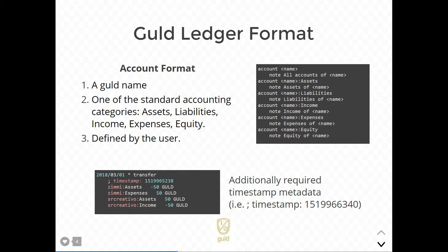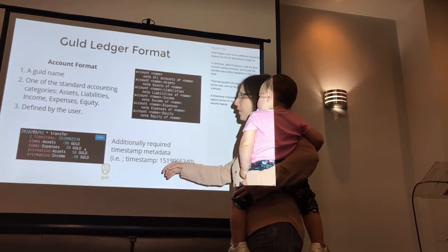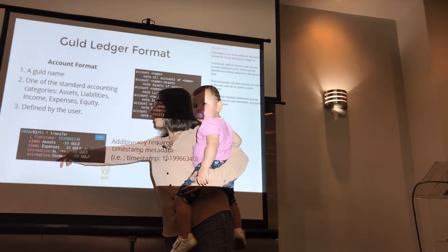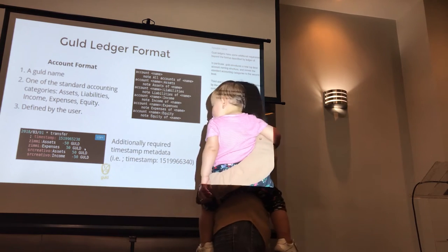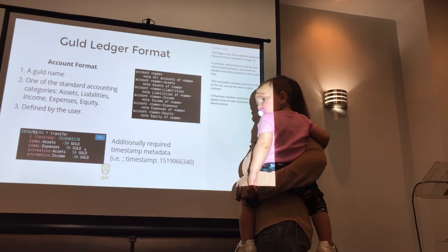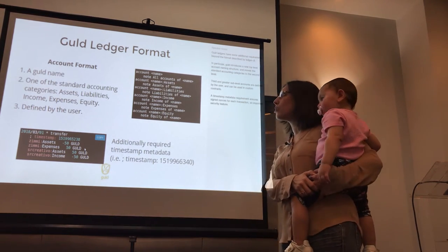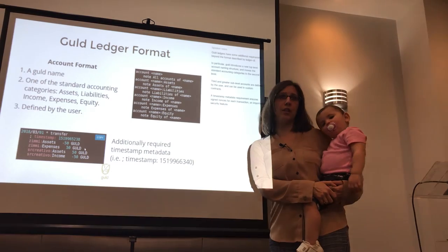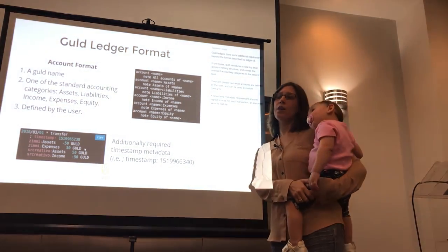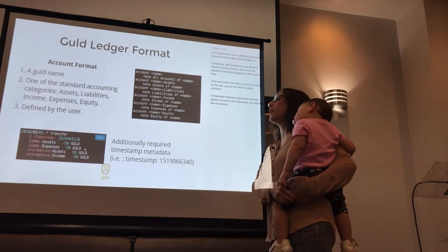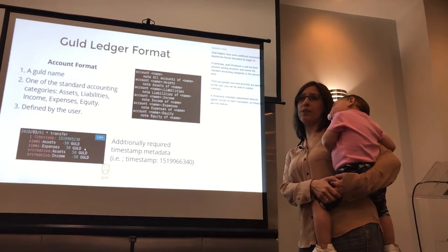The Gold Ledger format creates the account name, as you can see over here. It has its normal debit and credit and goes by the standard accounting procedures. Additionally, what Gold requires from Ledger CLI is timestamps. But you can also customize it to make more unique transactions based on your needs, as well as contracts that you would write yourself.